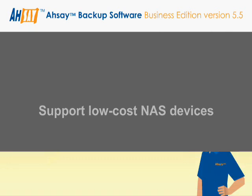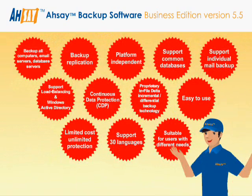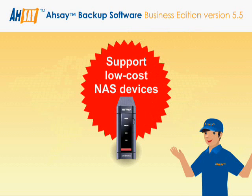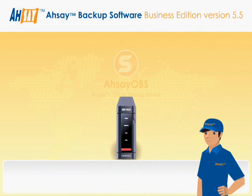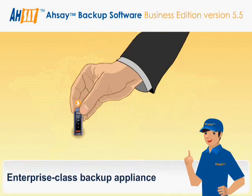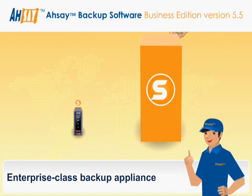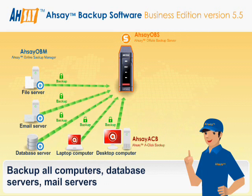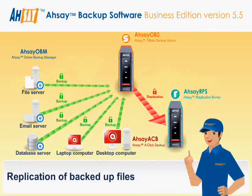Support for low-cost NAS devices. With our version 5.5, the Assay OBS can be installed on a low-cost network attached storage device — a NAS device. Once Assay OBS is installed, the NAS device is turned into an enterprise-class backup server with all the powerful backup features equipped. It can be used to backup all computers, file servers, email servers, and database servers within your company. You can also install Assay replication server on a NAS device to backup the primary backup server, thus achieving a second level of protection.